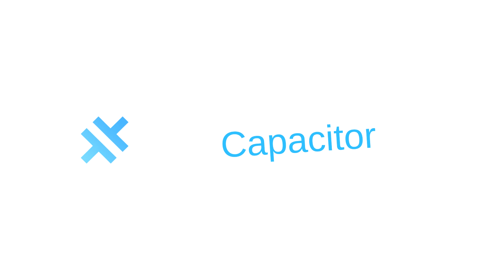Besides Stencil, the Ionic team also created Capacitor, which is a cross-platform app runtime that makes it easy to build web applications that run natively on iOS, Android, desktop, and the web. They call these applications native progressive web apps, and they represent the next evolution beyond hybrid applications.